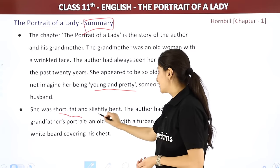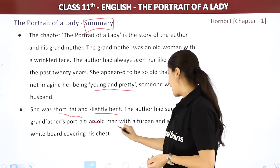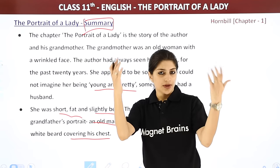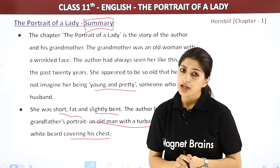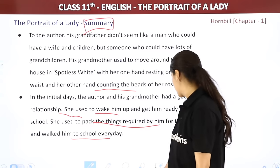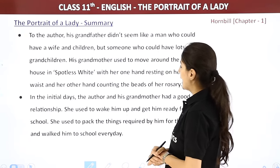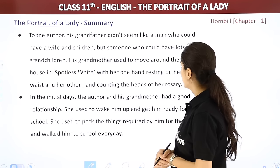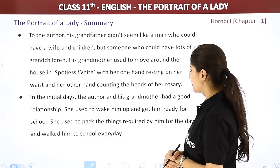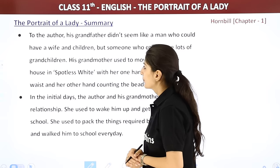She was short, fat, and slightly bent. The author had seen his grandfather's portrait — an old man with a turban and a long beard covering his chest. His grandfather's portrait was also kept in the drawing room. The grandfather didn't seem like a man who could have a wife and children, but someone who could have lots of grandchildren. His grandmother used to move around the house in spotless white, with one hand resting on her waist and the other counting the beads of a rosary.